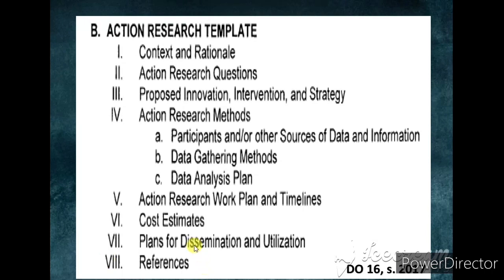Part Five is the Action Research Work Plan and Timelines. Part Six is the Cost Estimates. Part Seven is the Plans for Dissemination and Utilization — how you are going to disseminate the output of your action research. Part Eight is the References — follow APA format, the American Psychological Association format for citing references. This is based on DepEd Order Number 16, series of 2017, for research management guidelines.